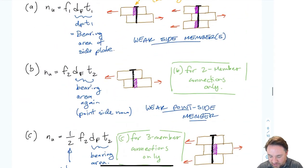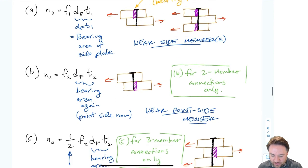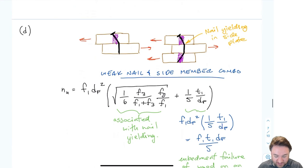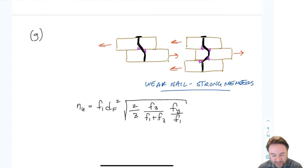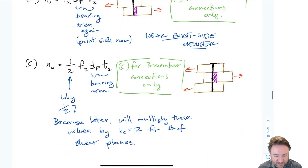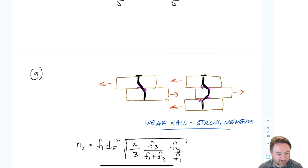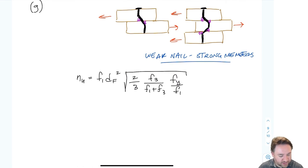Now that we have all seven equations, some are applicable to both two-member and three-member connections, some only to two-member connections. For a two-member connection we use modes A, B, D, E, F, and G — skipping C. For three-member connections we use modes A, C, D, and G — skipping B, E, and F. So there are only four failure modes to calculate for a three-member connection.